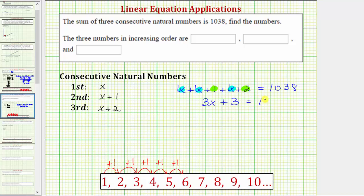So the left side simplifies to three x plus three, and this equals 1,038. And now we have a two-step equation. The next step is to add or subtract to isolate the variable term.